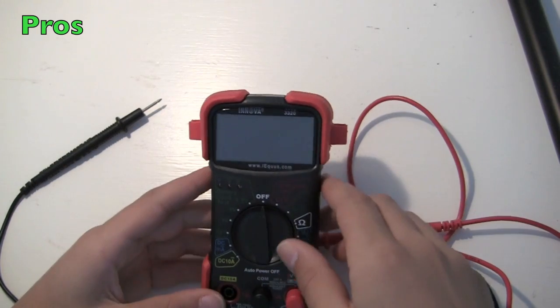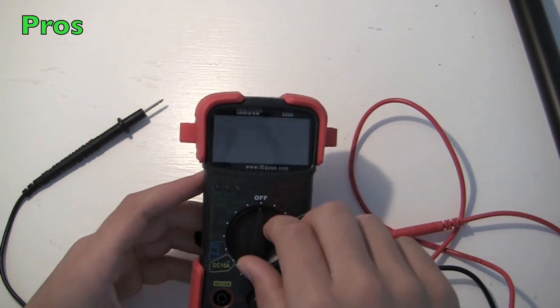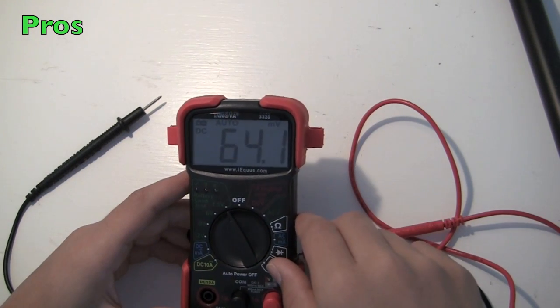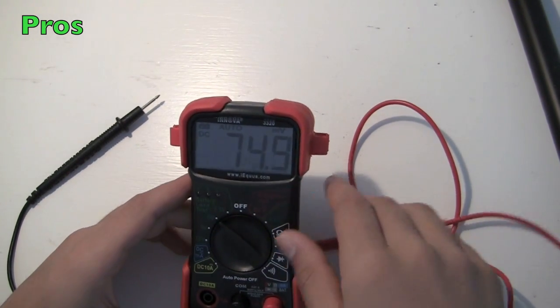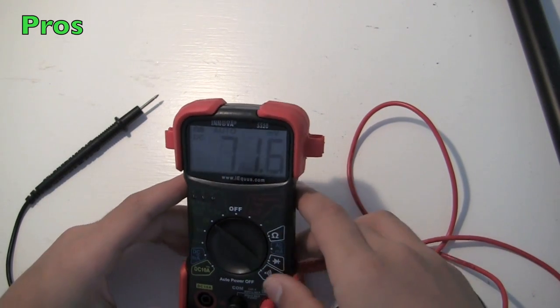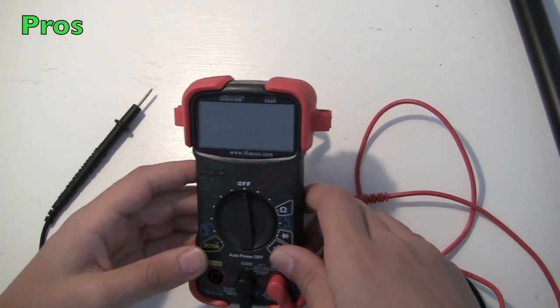An auto-ranging multimeter actually means it can quickly find the range that you're measuring without having to manually input what range you're measuring or whatever else you're doing with the multimeter.